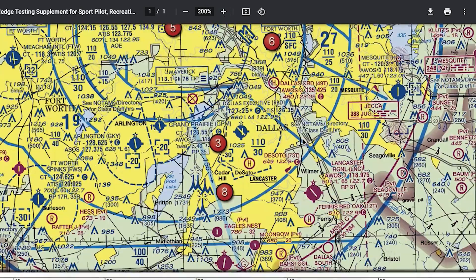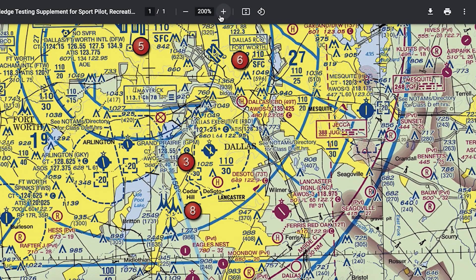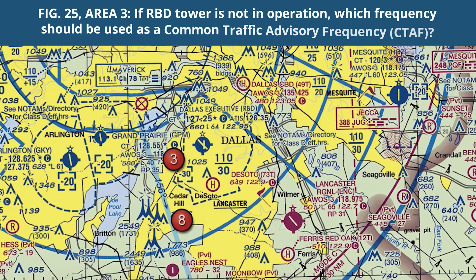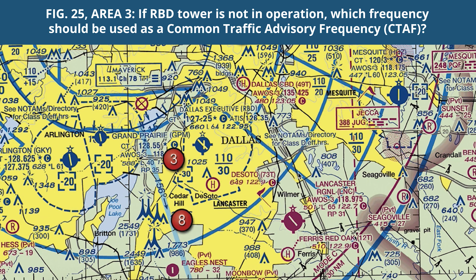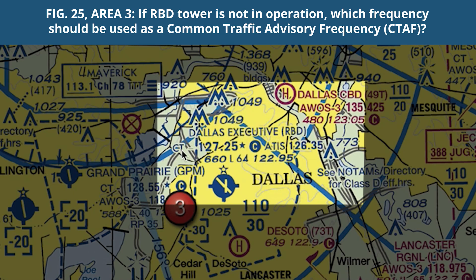Refer to figure 25, area three. If Dallas Executive — or RBD — tower is not in operation, which frequency should be used as a common traffic advisory frequency, or CTAF, to monitor airport traffic? The first thing we need to do is find Dallas Executive Airport, RBD. We can see the text here — Dallas Executive, RBD — and all of this information refers to this airport icon right here.